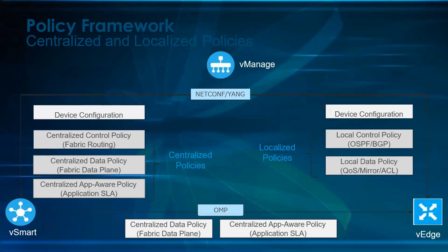There are basically two types of policy: centralized policy and localized policy. The centralized policies are defined as centralized control policy, centralized data policy, and centralized application-aware policy. The centralized data and control policy is the policy which is sitting on the vSmart and doing the things.